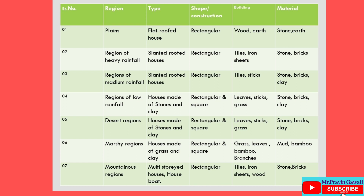Third region: Regions of medium rainfall. Type: slanted roofed houses. Construction: rectangular. Building material: tiles, sticks, natural materials, stone, bricks and clay.